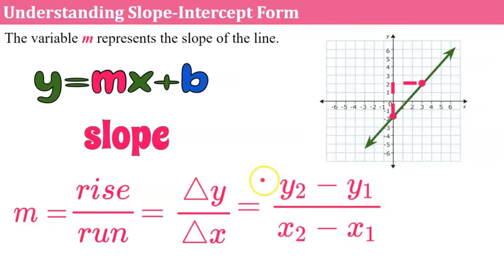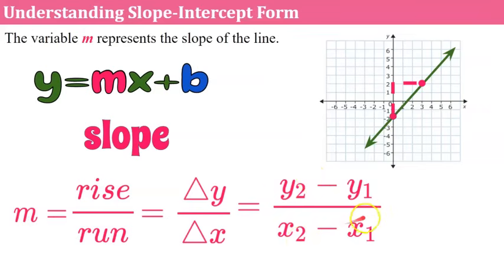Or we can use the ordered pairs — take one ordered pair and the second ordered pair, subtract the y-coordinates in the numerator, subtract the x-coordinates in the denominator, and get your slope.